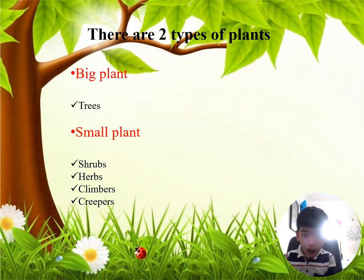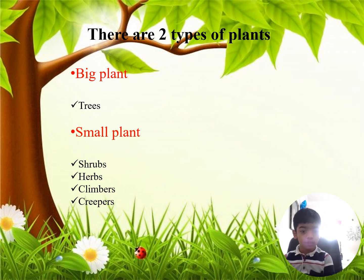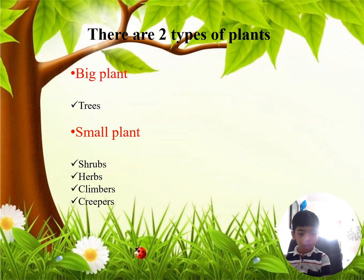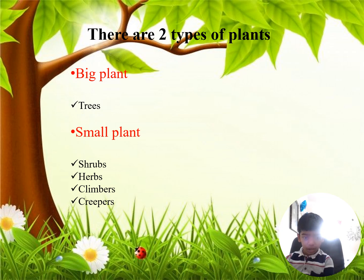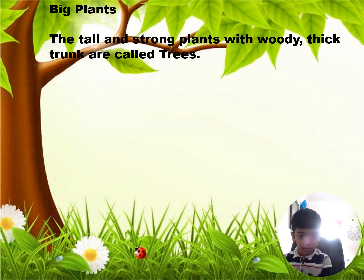There are two types of plants: big plants, which are trees, and small plants, which include shrubs, herbs, climbers, and creepers.